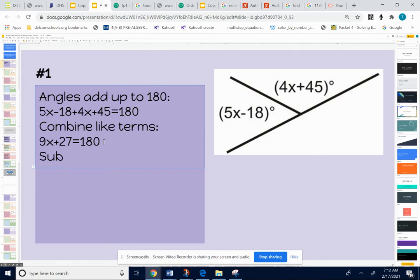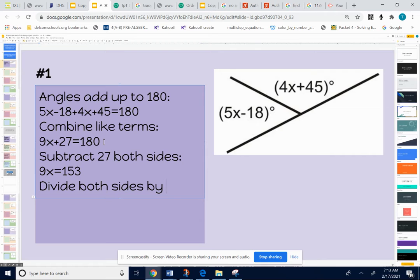So now I have 9x plus 27 equals 180. Just so you're showing your steps - I'm going to subtract 27 from both sides. And that gives me 9x equals 153. And now I'm going to divide both sides by 9 to figure out what x is. And I get x equals 17.